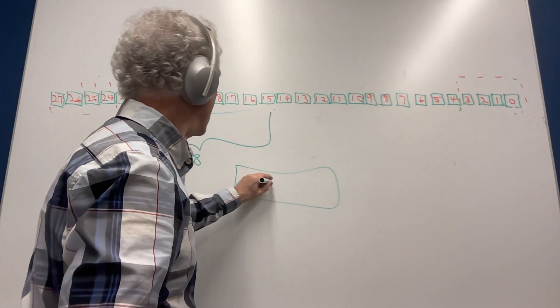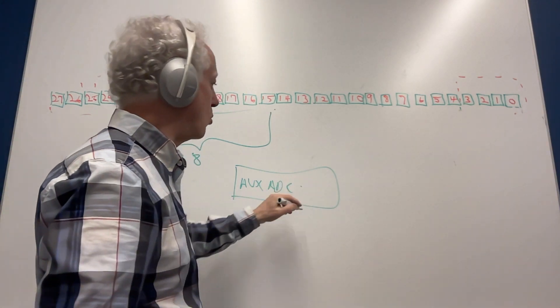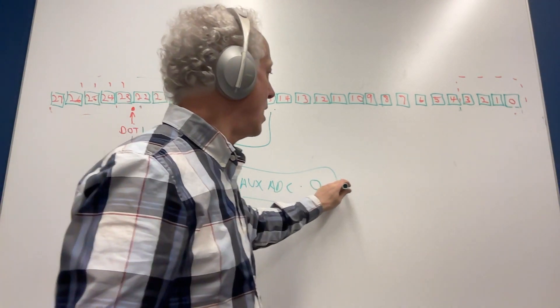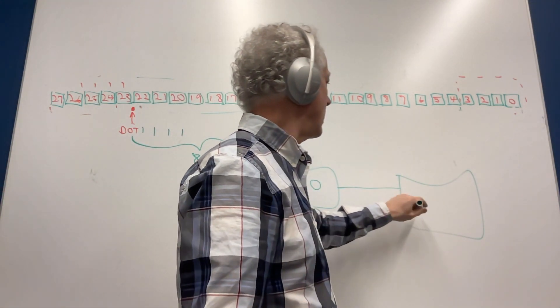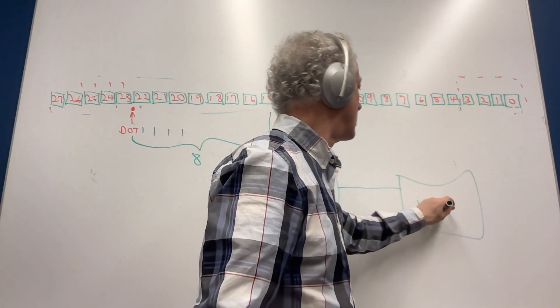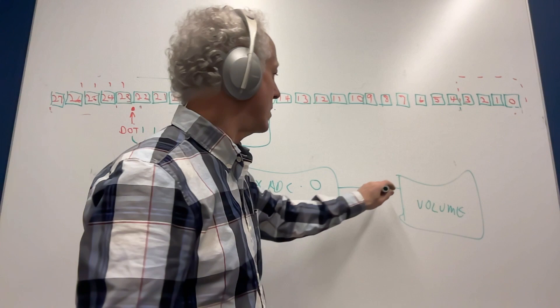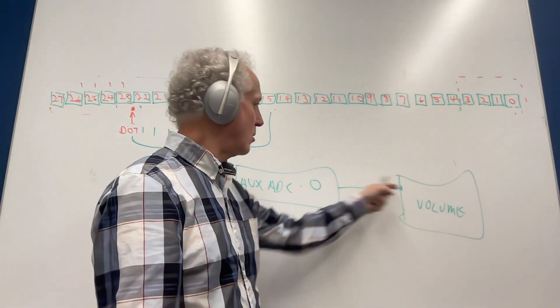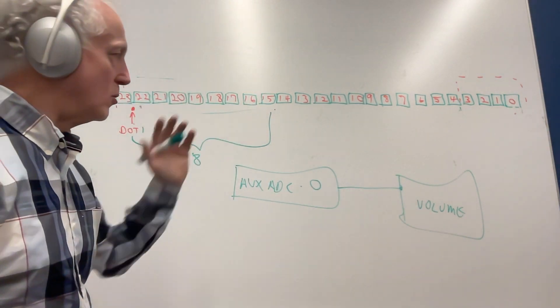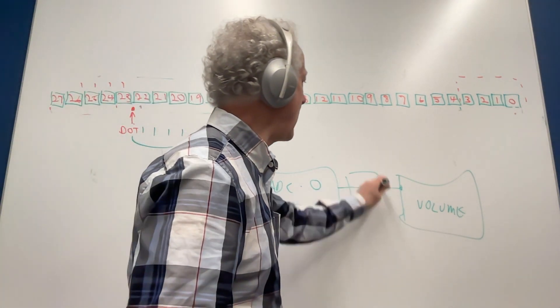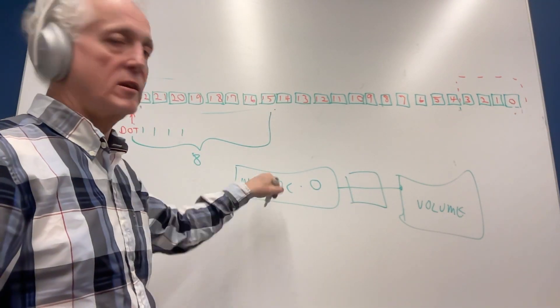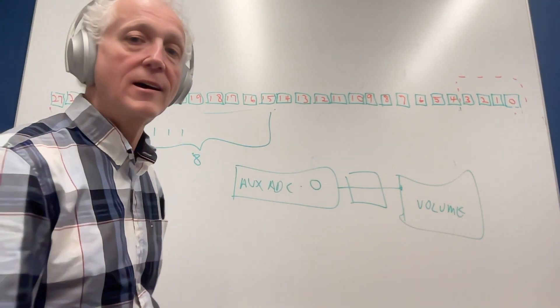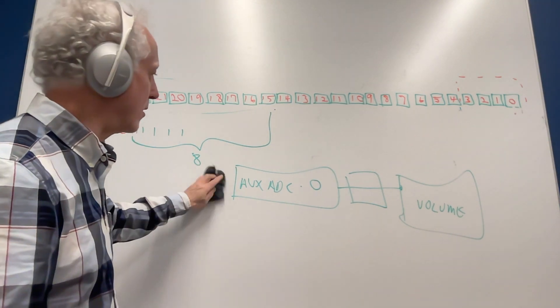Literally the block that says aux ADC, you know, and you choose which one. There are four of them, so aux ADC zero, and then we send it right to the volume control input. Right to the control input, I'll have to show this to you in another video or elsewhere in this video. A lot of times I'll put in a read back right here so I can check to make sure this is working properly and I get my zero to 0.9999 proper levels going there.